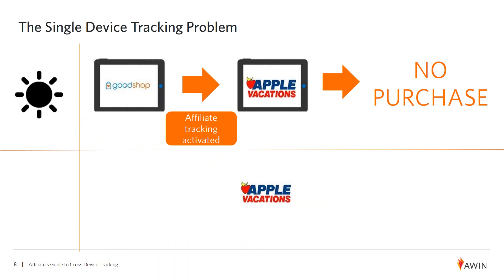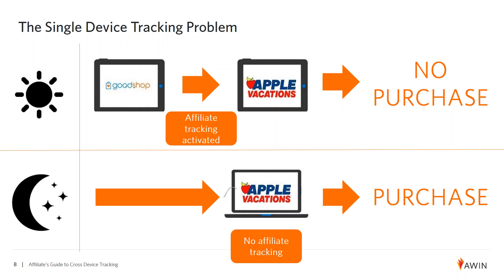In the past with affiliate marketing, here was the single-device tracking problem we faced. Someone would begin their morning on their mobile device and perhaps go to goodshop.com. The cookie drops while they're checking out Apple Vacations, but they didn't make their purchase then — maybe they wanted to think about it or didn't have time. That night when they go home they go straight to their desktop and make the buy. There's no affiliate tracking on the desktop, so no one ever got credited with that sale, even though the affiliate who started the journey in the morning should have. The result is that it makes the publisher look like they had a lower conversion rate than was accurate, and the advertiser credits the sale to a different channel than affiliate marketing.